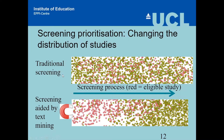Basically, the way we interact with this technology is that as we screen, the machine learns what we're looking for and, if it's working well, increasingly becomes able to distinguish between relevant and irrelevant citations.